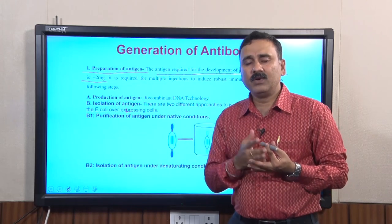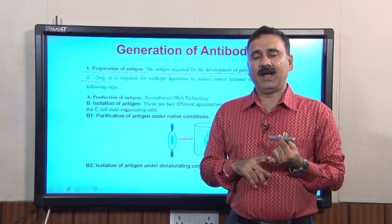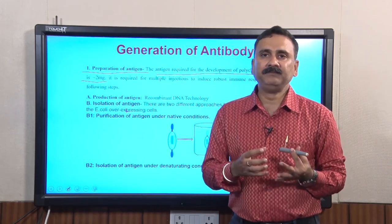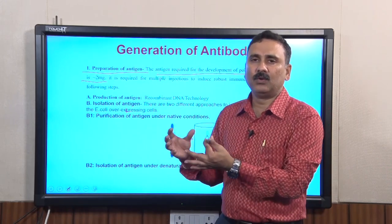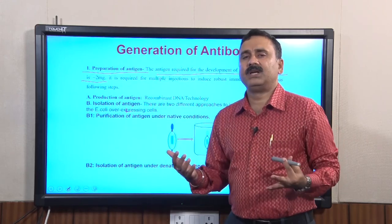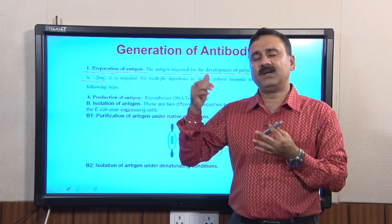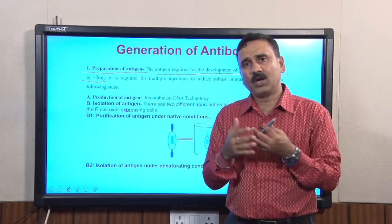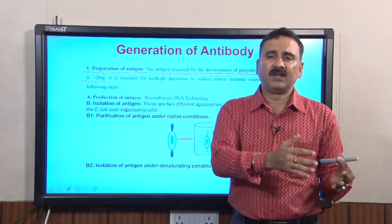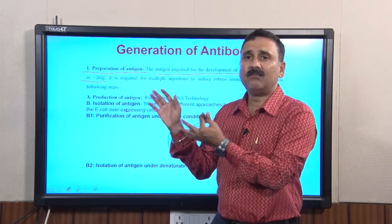The choice of animal for generating an antibody depends on many factors. Number one, the source of antigen and the animal should be of distant relatives. If you are getting antigen from a human, it is advisable to use an animal that has less homology to humans. For example, you cannot use a monkey for generating antibodies against a human protein, because the similarity between the protein in human versus the same protein in monkey may be very close, and in those cases the antibody response will be very low.